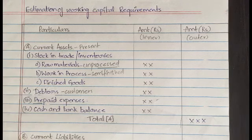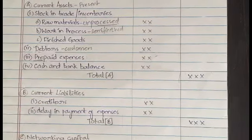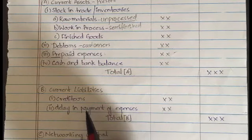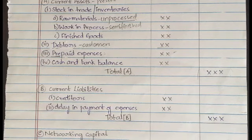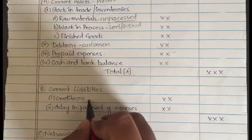Now we are done with current assets. We will be moving on to the current liabilities — what are the current liabilities and how do we estimate them. Current liabilities are the payments that you have to do every month or every year; they are the expenses that a company will have to bear. In current liabilities we have two things: the first one is creditors, and the second is delay in payment of expenses.